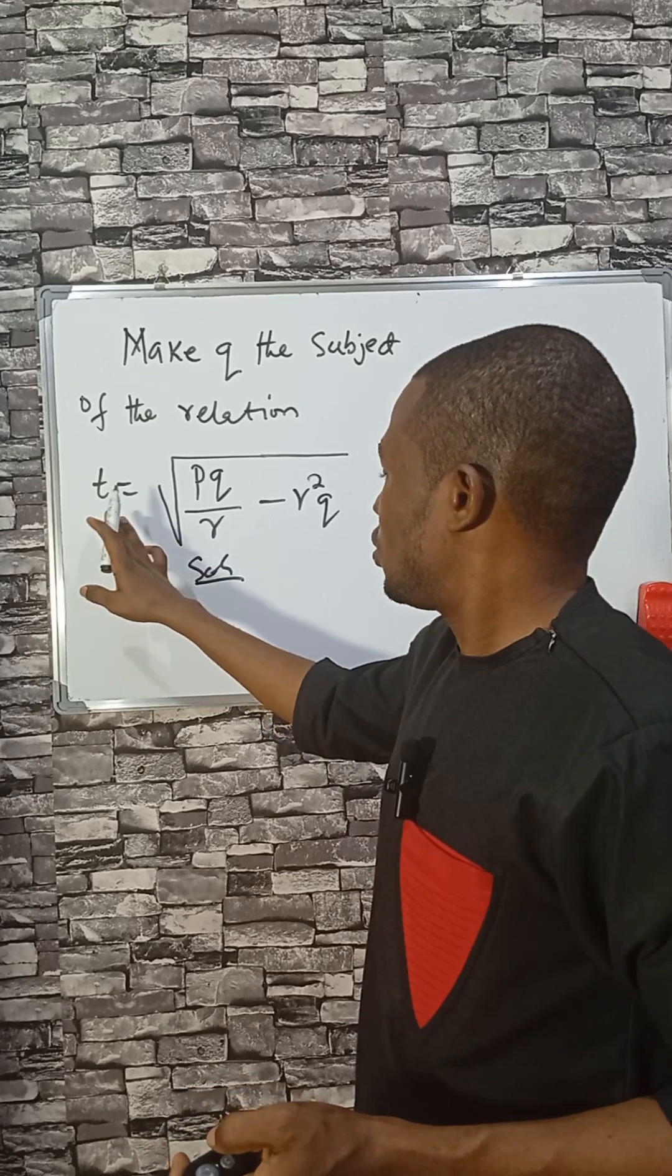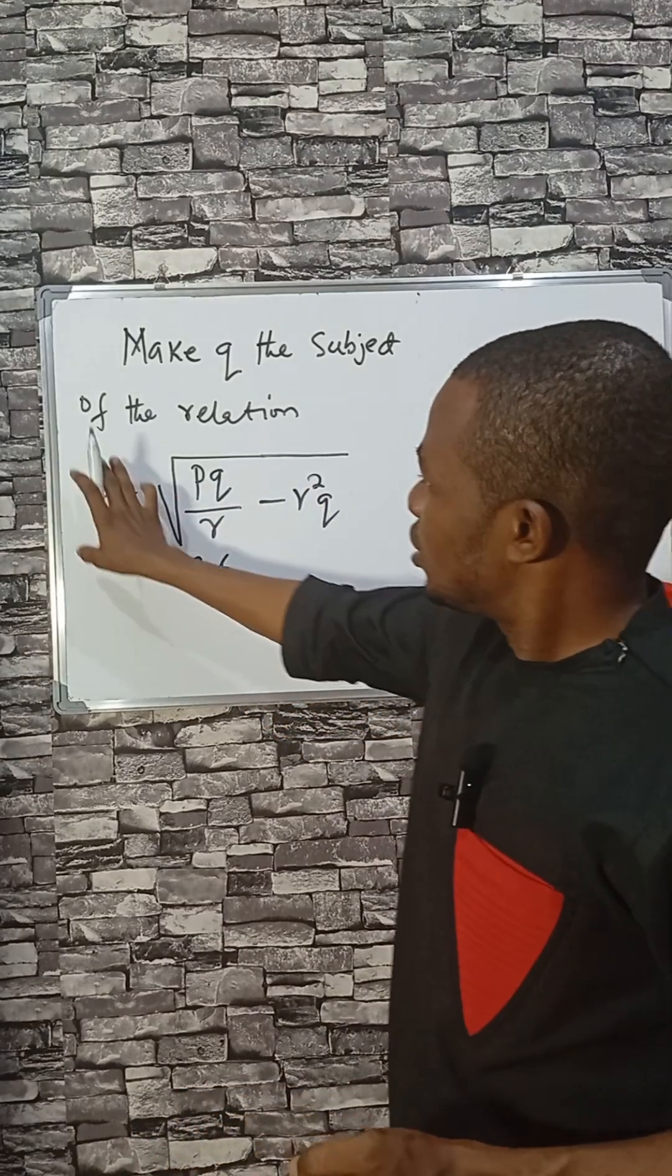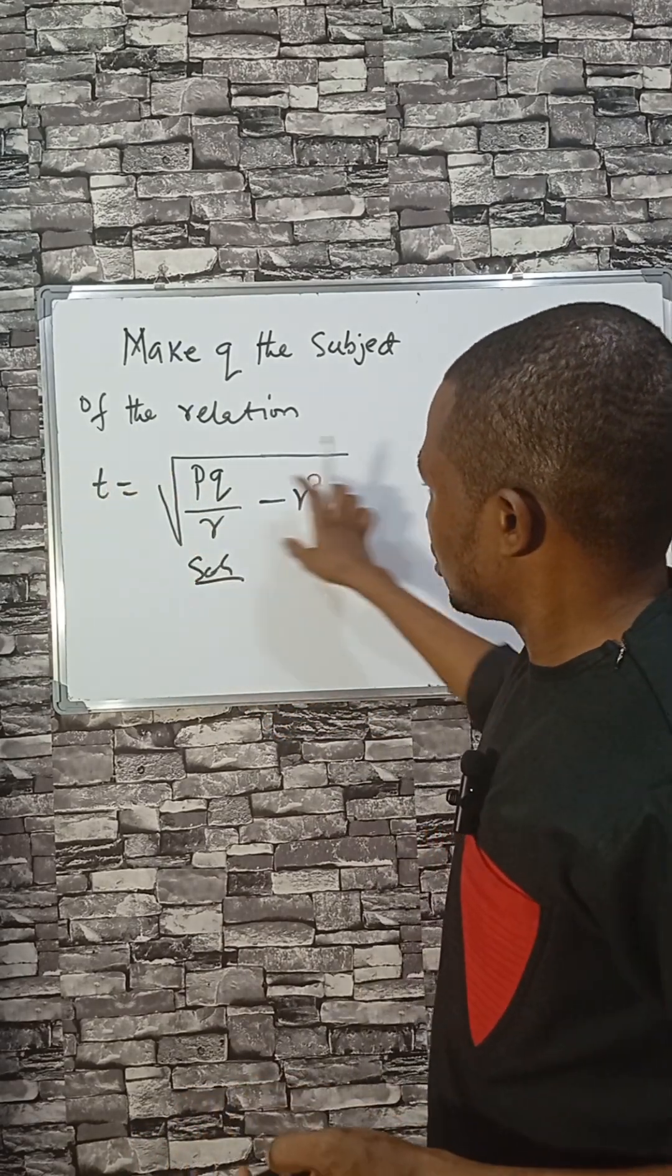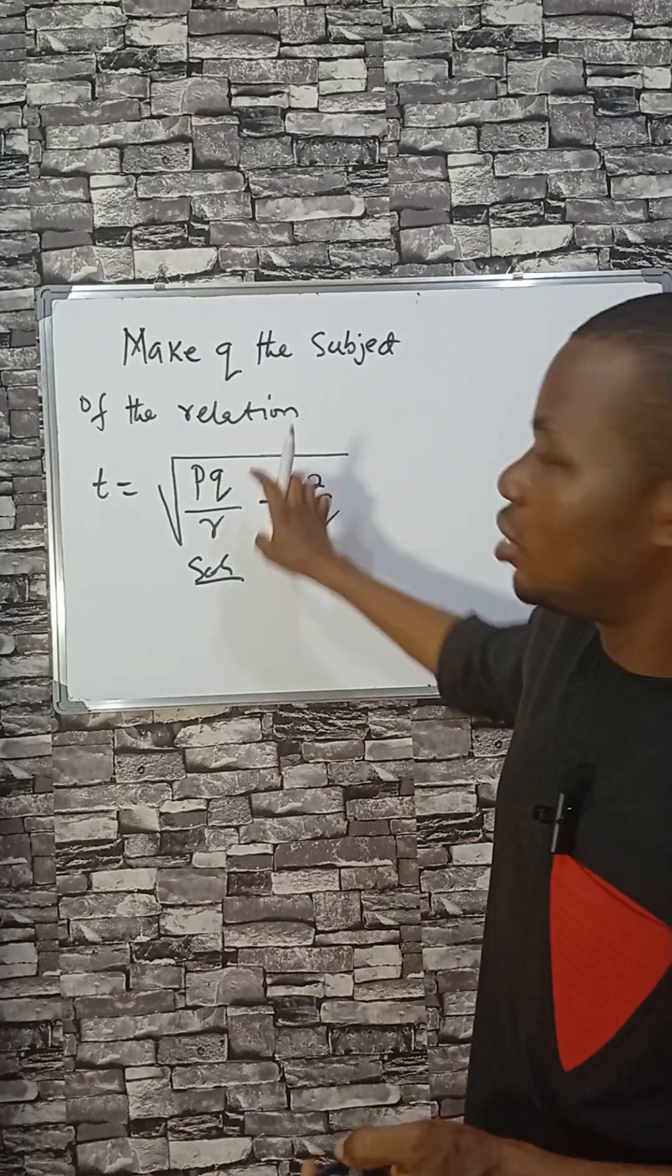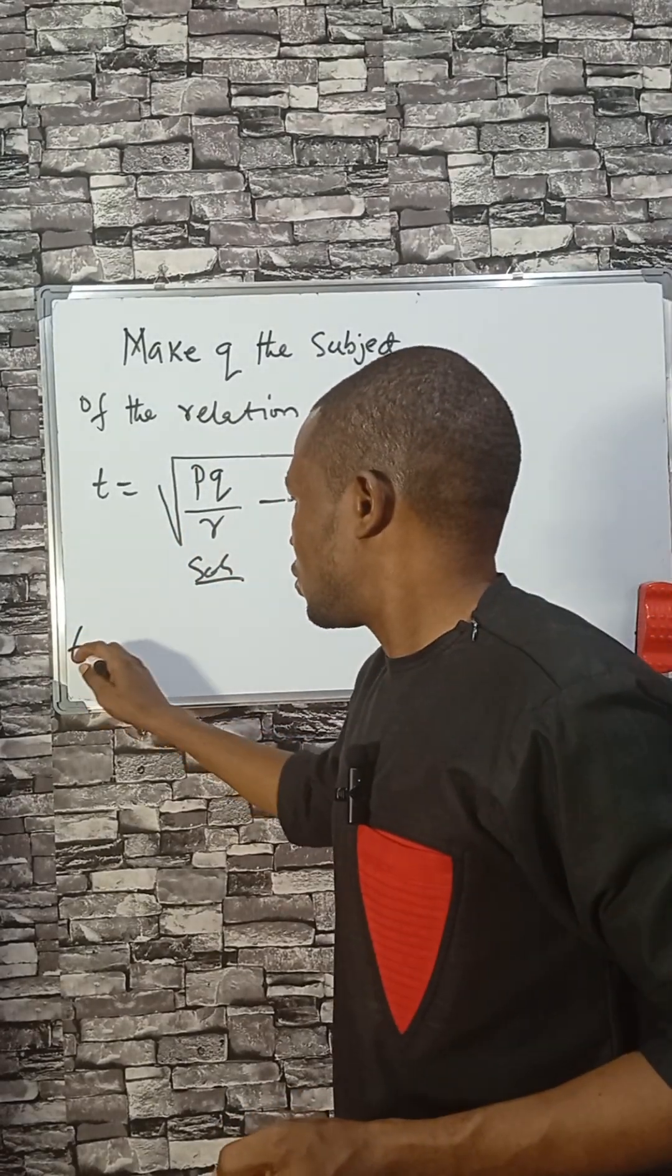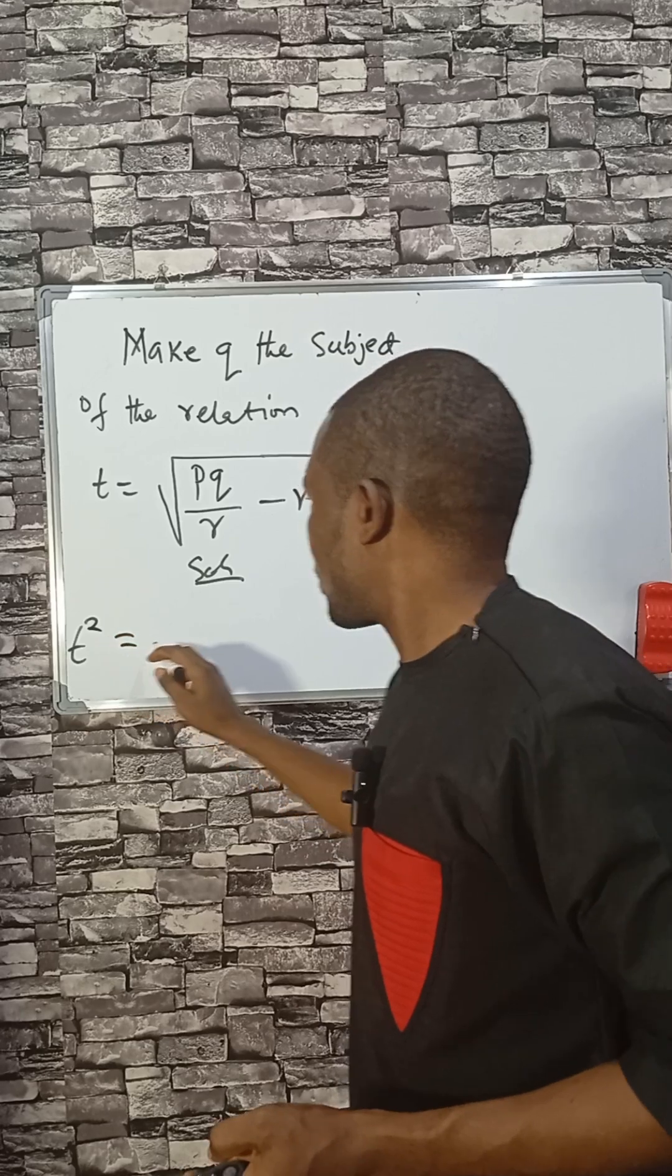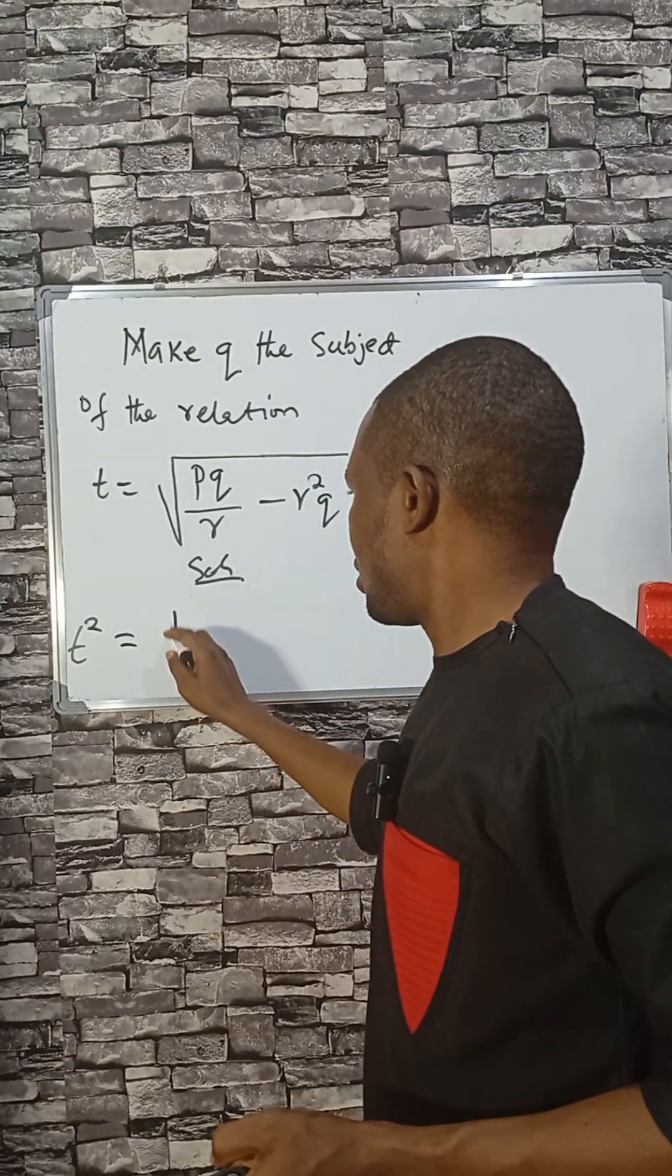What you need to do: if I take the square of both sides, the entire square root sign here will leave what is here, and that would be c squared equals to pq